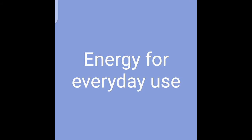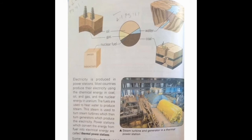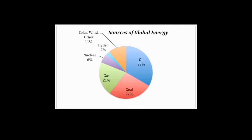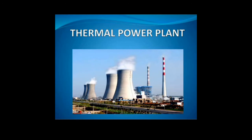Now we will talk about energy for everyday use. There is a pie chart showing different types of energy sources present in the Earth's crust: oil, gas, coal, water, wind, nuclear, and others. Electricity is not directly obtained from the Earth's crust — it is generated by different processes.